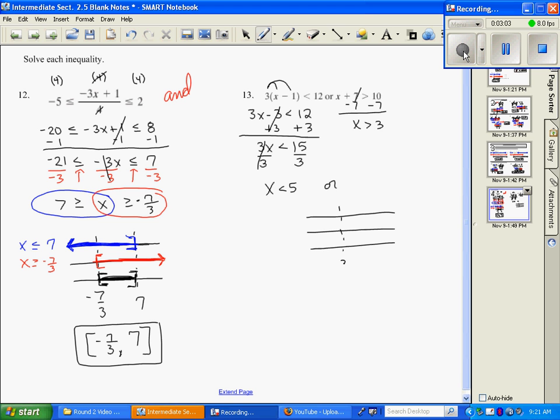So I have a 3 and a 5. I'm going to do x is less than 5 on the top one, which is a parenthesis at the 5, shade to the left. I'm going to do x is greater than 3 on the next line.